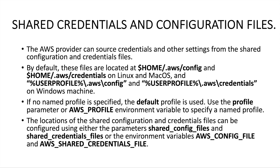To reference the shared configuration file and the credentials files, within the provider block you can pass the parameters shared_config_files and shared_credentials_files. Alternatively, you can declare them as environment variables using AWS_CONFIG_FILE and AWS_SHARED_CREDENTIALS_FILE. The config file will be for the shared configuration file and the credentials file will be for the shared credentials file.